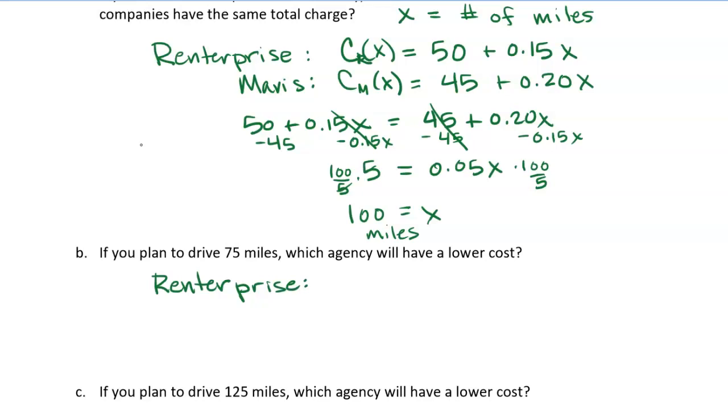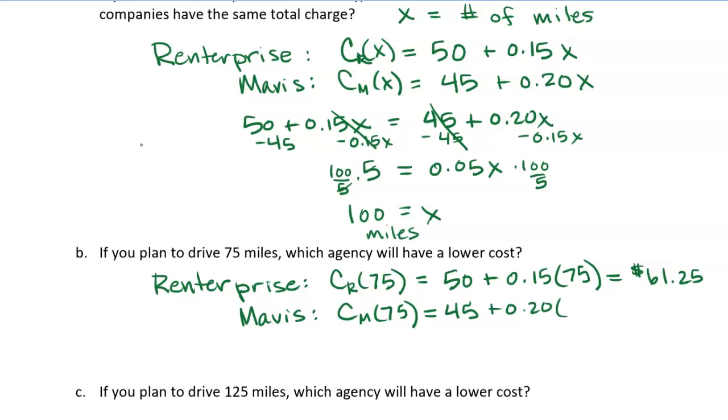Alright. That's just kind of reasoning it out. But what I would probably want you to do in this case is actually let's calculate the costs for each one and just compare them. Alright. So we have cost functions for each one. So the renter prize car at 75 miles. So the input is 75 miles. And I'm just going to take 50 plus 0.15 times 75. Okay. Put that into my calculator and I get 61.25. So $61.25 to rent from renter prize if you drive 75 miles. So let's do the same thing for Mavis. Let's do C sub M of 75. And so we have 45 plus 0.20 times 75. Alright. Put that into my calculator and I get an even $60. So you can see indeed that Mavis. Mavis is cheaper.